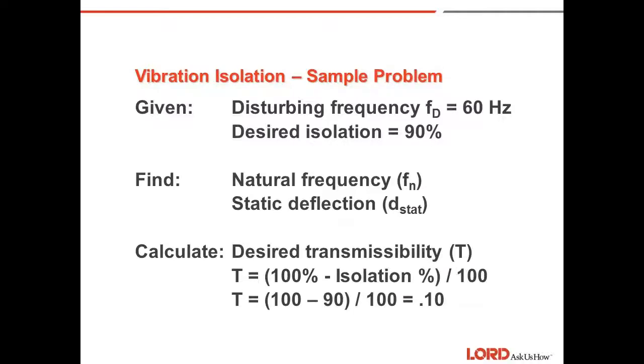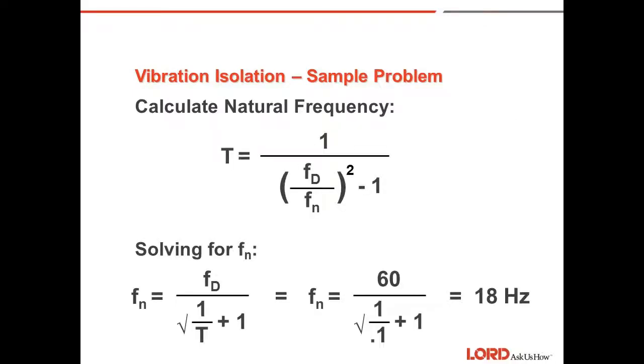Transmissibility is, again, the ratio of output to input. So if we have 100% minus the isolation efficiency of 90 divided by 100, we need transmissibility of 0.1. Now we can calculate the natural frequency from the formula T is equal to 1 divided by the frequency ratio squared minus 1.